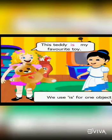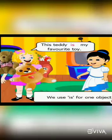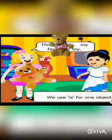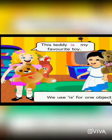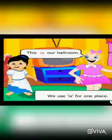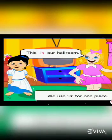Ritu says: 'This teddy is my favorite toy.' We use 'is' for one person, one object, or one animal. We are talking about a toy, so we use 'is'. Ritu says: 'This is our hall room.' She is talking about a place, so she uses 'is'. We also use 'is' after a singular noun or pronoun.